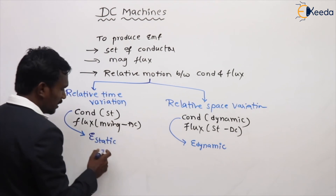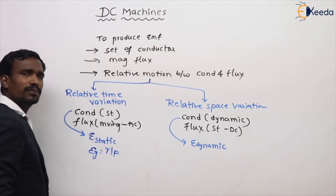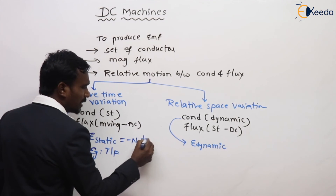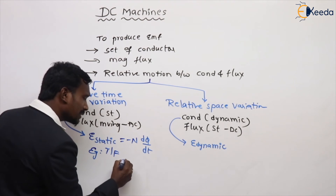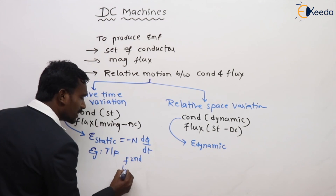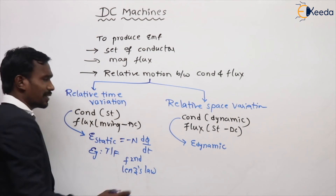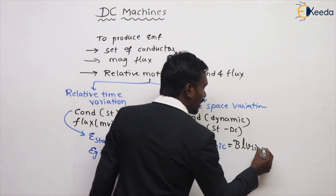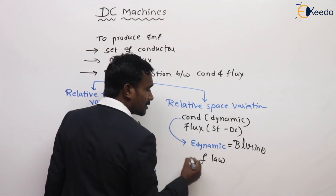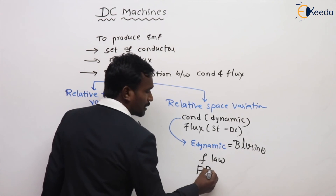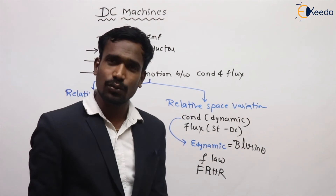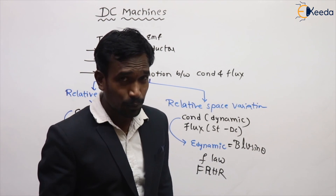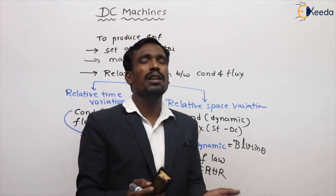The best example of static induced EMF is the transformer, where EMF equals −N dφ/dt. Its magnitude is given by Faraday's second law and its direction by Lenz's law — as we already discussed in Transformers. Dynamic induced EMF has magnitude equal to BLV sin theta, its magnitude given by Faraday's law and its direction by Fleming's right-hand rule. This is simply the basic principle of the DC Generator.